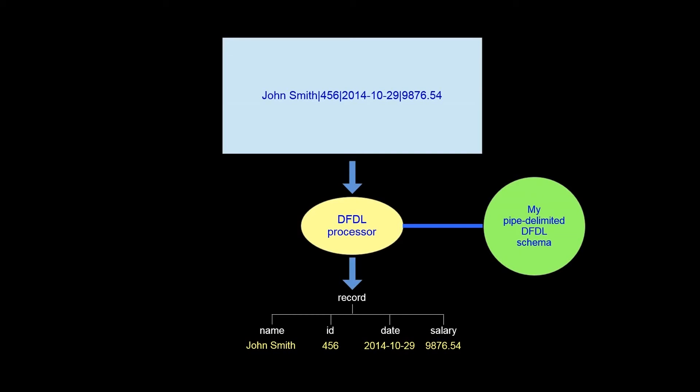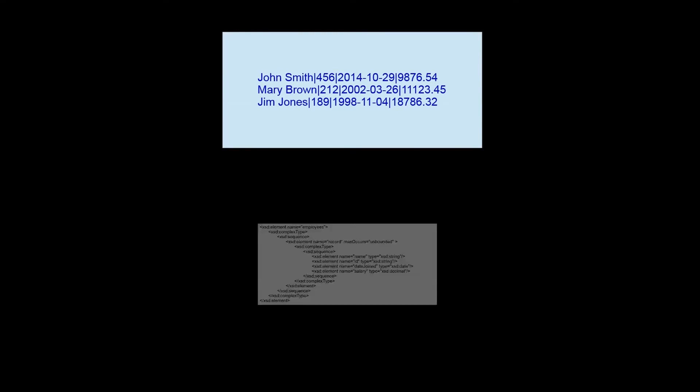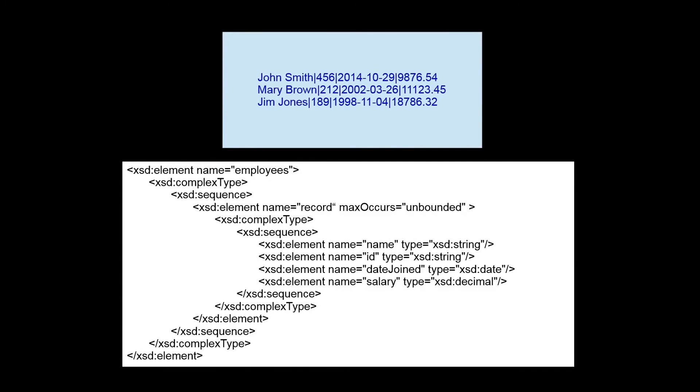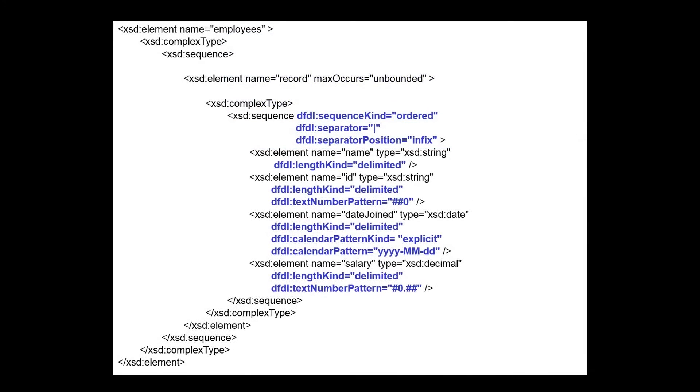So far we have looked at what is involved in parsing a single record. We need to add a few additional schema objects in order to process a set of repeating records like this, where each record is separated by a new line. Here we have the XML schema objects for a set of employees that contains a variable number of records, and here we have the additional annotations required to describe the physical format of the data.